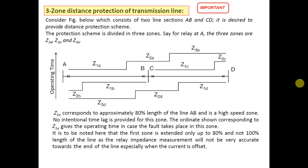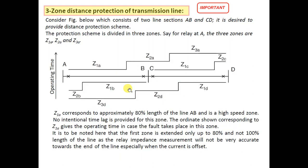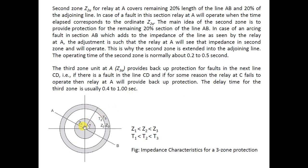Today we are going to discuss about three-zone distance protection of transmission lines. In the previous class we discussed about distance protection, but one disadvantage with conventional distance protection is that it will not be able to protect 100% length of the line, because due to inaccuracies in relay elements and instrument transformers, the relay might not distinguish between 99% and 101% of the line length, leaving some portion unprotected. This difficulty can be eliminated by three-zone distance protection, where every point on the line is protected by three layers of protection.